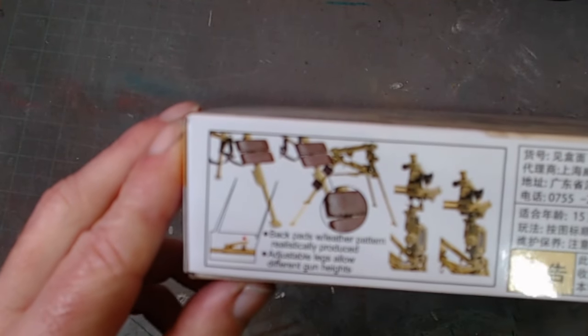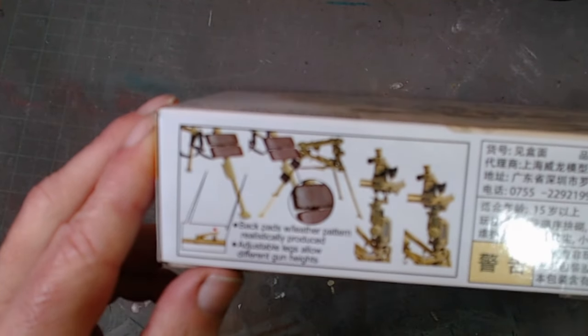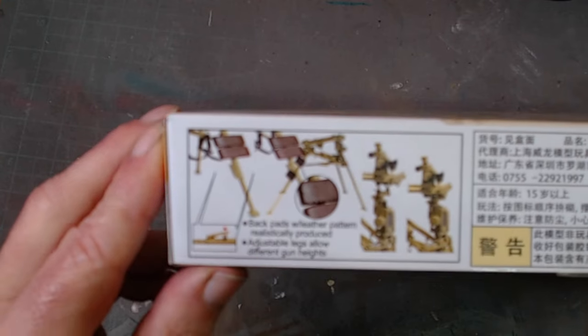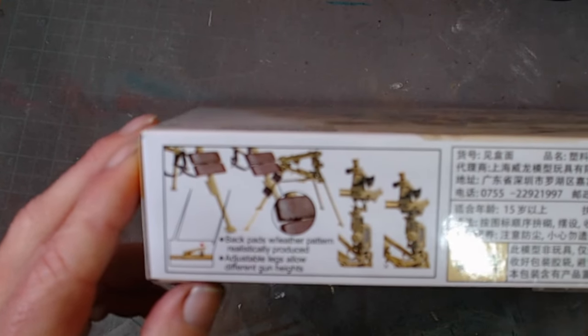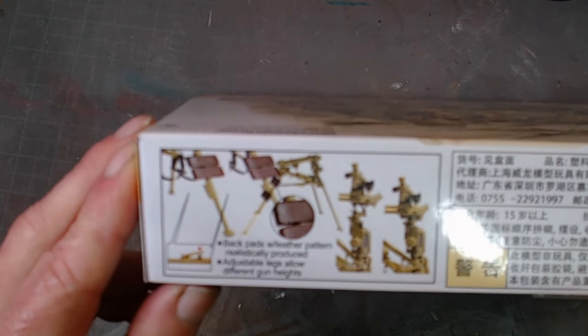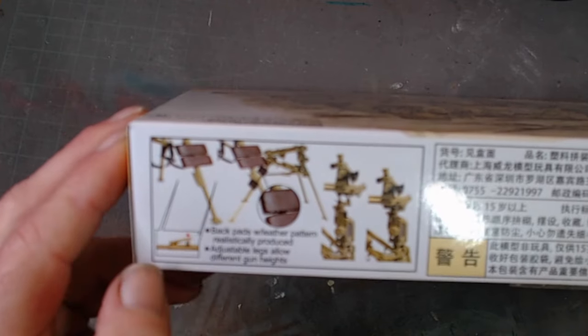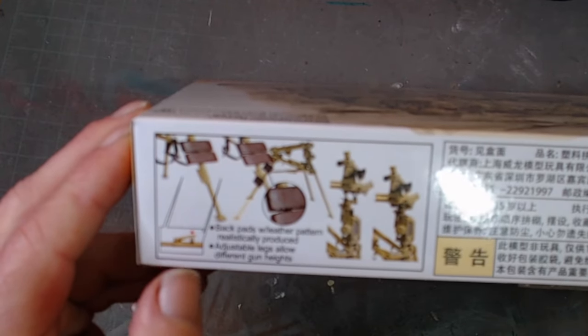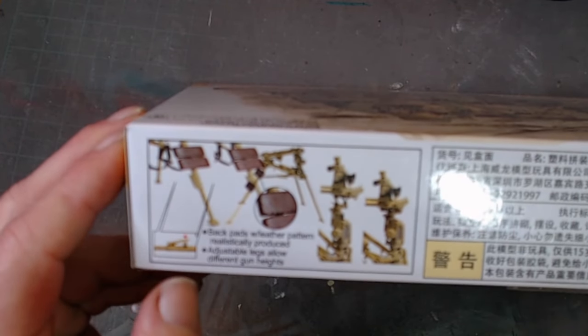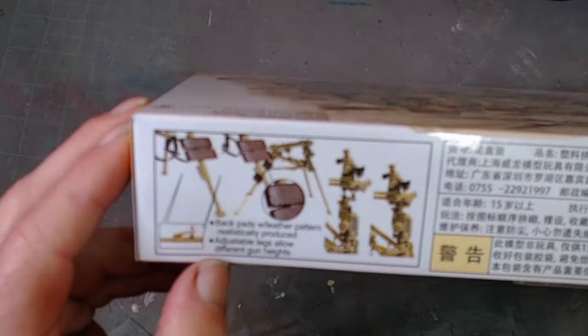I can't see it very well. This is probably about as much information as you're going to get out of the kit because it's a Dragon kit and it's pretty damn poor information. You've got backpacks with leather pattern realistically produced, and adjustable legs that allow different gun heights.